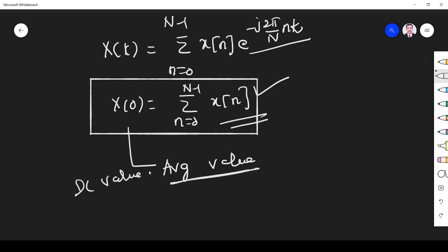X(0) is known as DC value or average value. I hope you understand everything clearly. If you are having any doubt, please ask me in the comment section. Thank you.